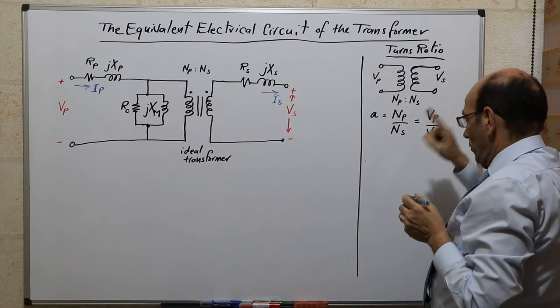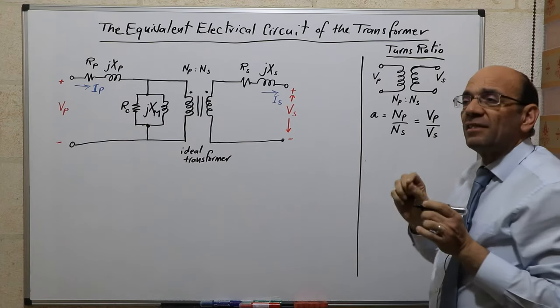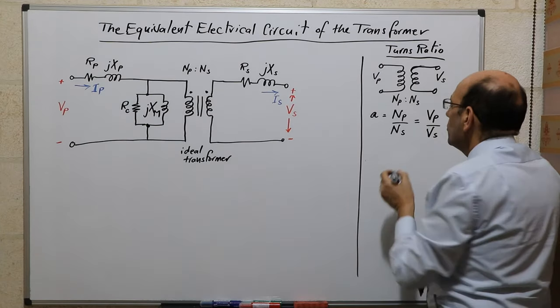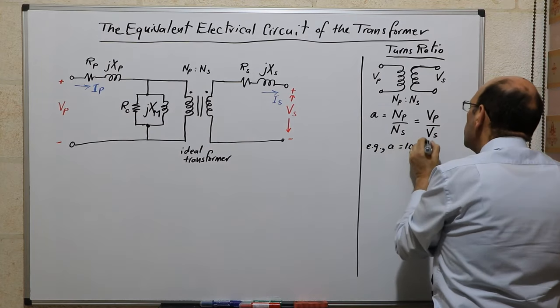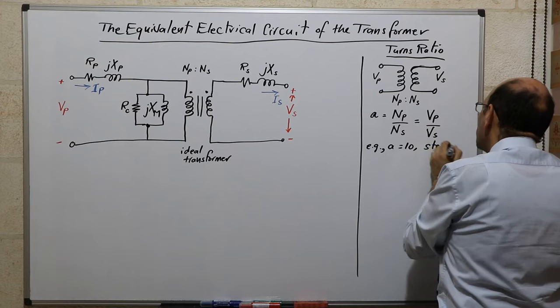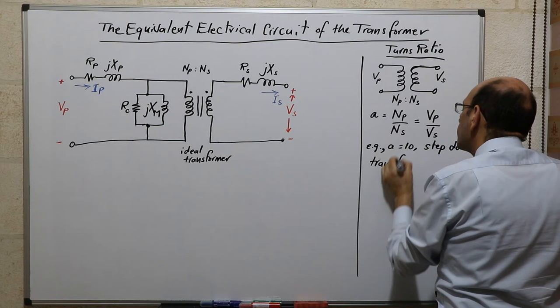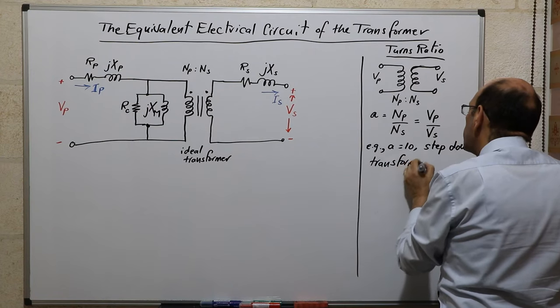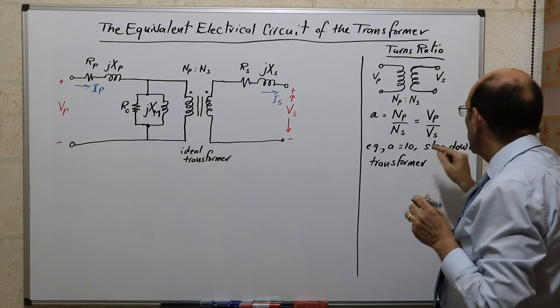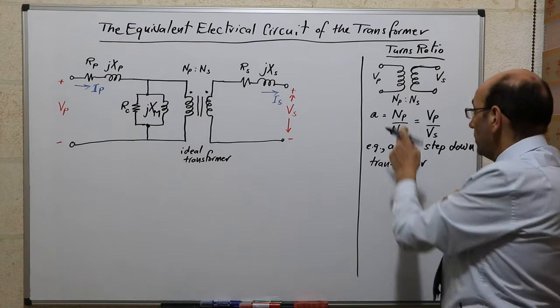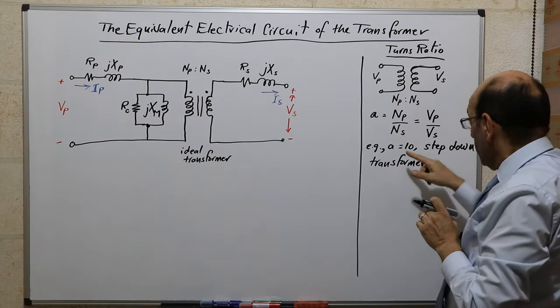For example, if A is 10, this means this is a step-down transformer. Because when we say step-down, we're referring to voltage, not current. So for example, if A is equal to 10, then this is a step-down transformer, which means it is stepping down the voltage. When we use the term step-down, we're talking about voltage. When we use the term step-up, we're also talking about the voltage. And the ratio of the number of turns is the same as the ratio of the voltage.